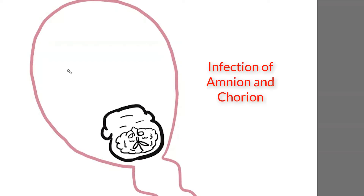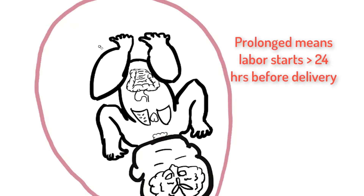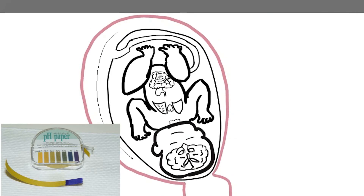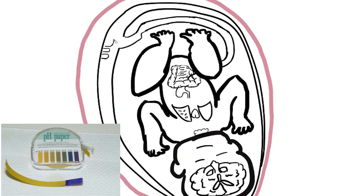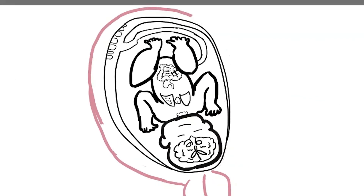Streptococcus agalactiae, aka GBS, can also cause chorioamnionitis, which is inflammation of the fetal membranes — the amnion and the chorion. The bacteria crawl up the uterus and affect the intra-amniotic sac and fluid. This usually happens in premature rupture of membranes or prolonged labor — defined as labor starting greater than 24 hours before delivery. We can confirm rupture of membranes using nitrazine paper, which detects fluid with a pH between 7.1 and 7.3; amniotic fluid falls within this range and turns the paper blue. Be careful of false positives like semen or cervical mucus.